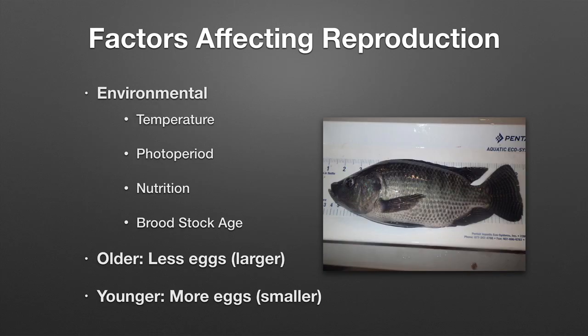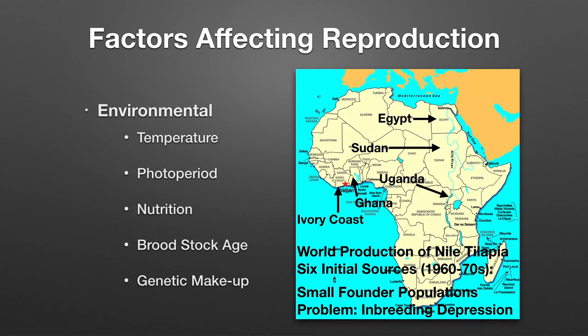The age of the broodstock is also very important — if they are too young they are not yet ovulating. At about eight months, nine months, or one year, younger fish can produce more eggs, but these eggs are smaller than those from older females of five, six, or seven years, which produce larger but fewer eggs.